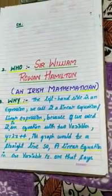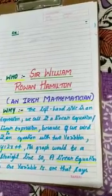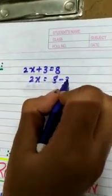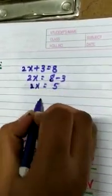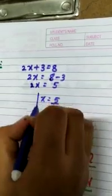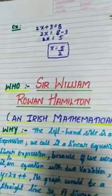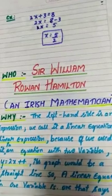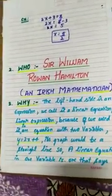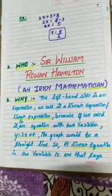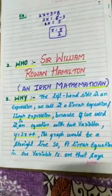For example, we have 2x plus 3 equals 8. When we subtract 3 from both sides, we get 2x equals 5, so x equals 5 by 2. This equation has only one solution, which is x equals 5 by 2. So this example is suitable for a linear equation in one variable.